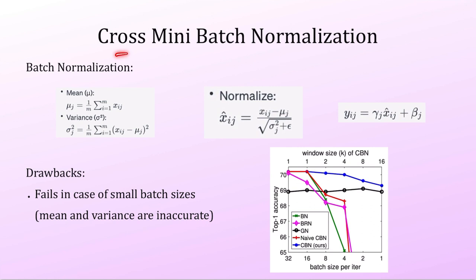Let us start with cross-minibatch normalization. Batch normalization is used to reduce internal covariate shift. Every iteration, the activation function distribution changes, so the weights have to adjust to the new distribution. To reduce that, we use batch normalization — we take the mean and variance of the entire batch, normalize the features, and then learn parameters gamma and beta, which are scaling and shifting parameters to generate a new distribution.